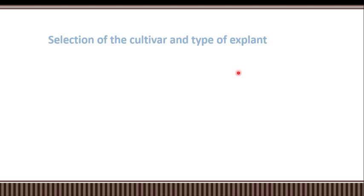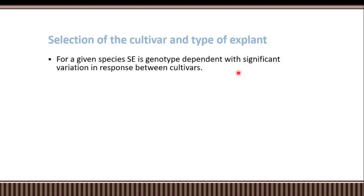First of all, we have the selection of cultivar and type of explant. We are discussing the indirect type of somatic embryogenesis. The cultivar and explant source and type are very essential and important for the plant tissue culture experiment. One of the major factors affecting the outcome is the source of the explant and also the cultivar selection.